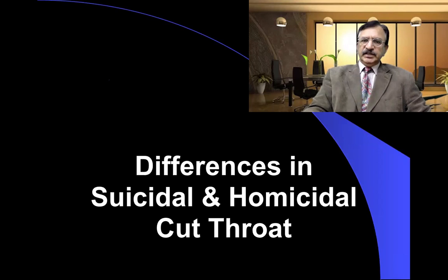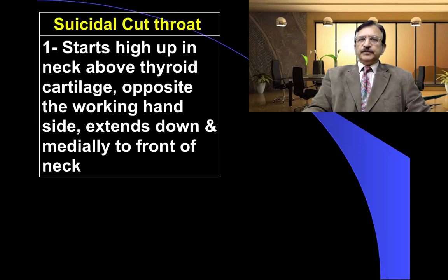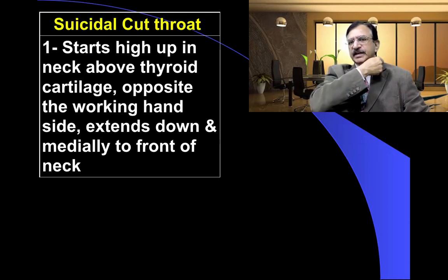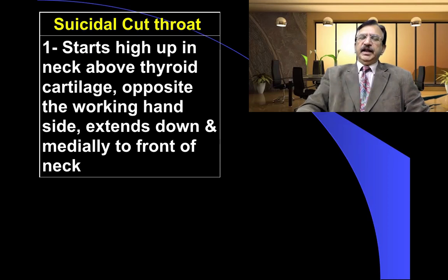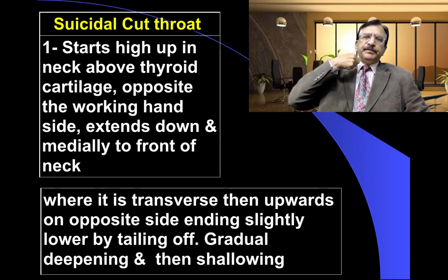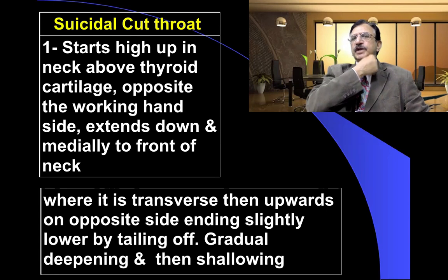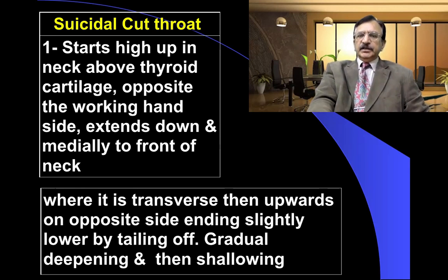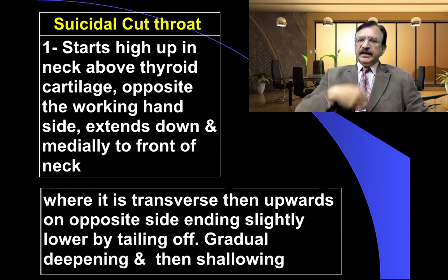In suicidal cutthroat, the injury starts high up on the neck above the thyroid cartilage, opposite the working hand, and extends down medially in front of the neck, then it is transverse, and then a little upwards but not up to the starting point. So it starts from the opposite side, comes down in the middle, and then again a little up but not up to the height from where it started. There is gradual deepening and then shallowing.